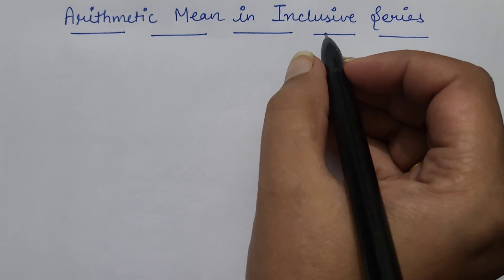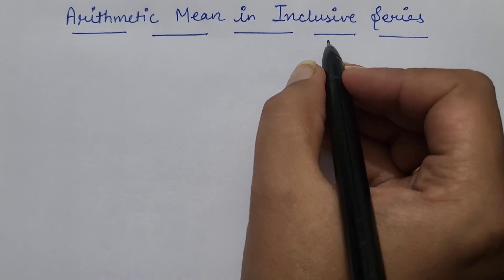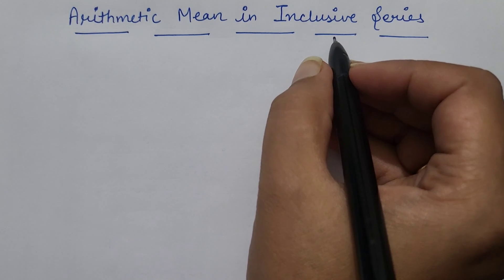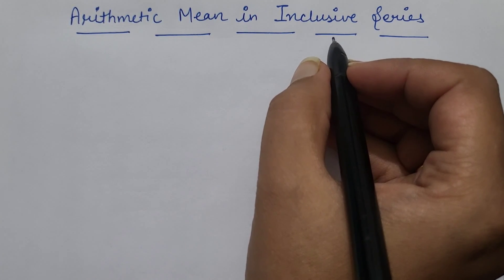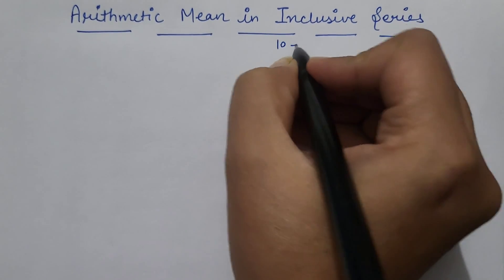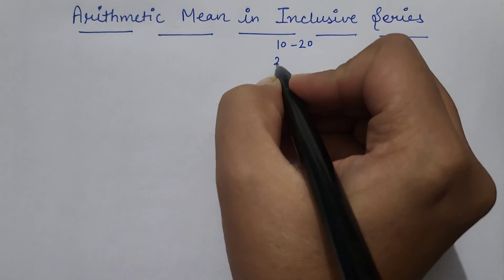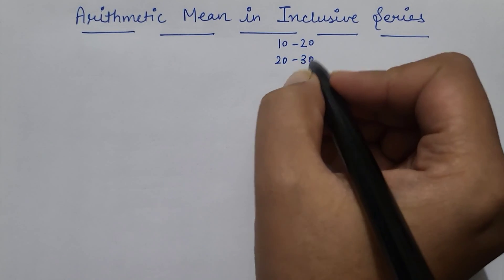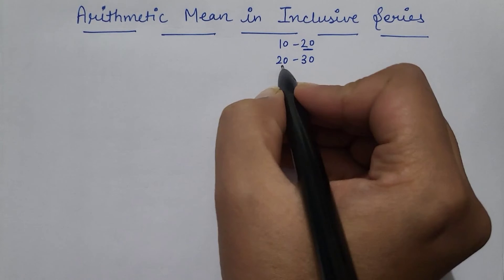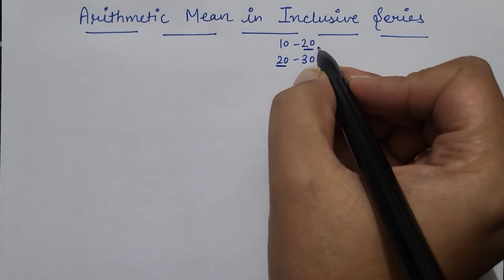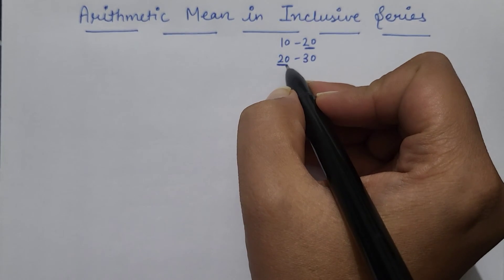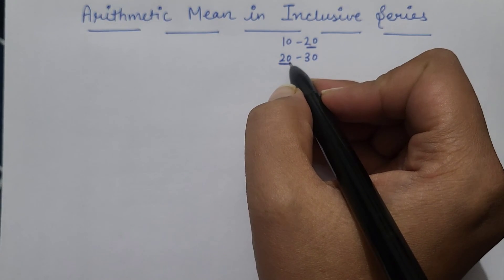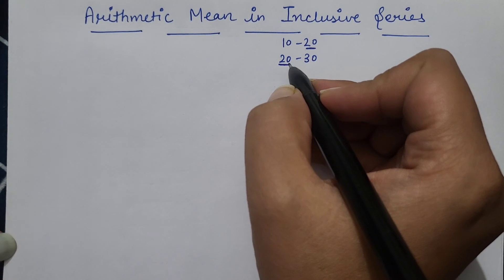So first here I am taking inclusive series. Inclusive series kya hoti hai? We covered continuous series in the last lecture where class intervals were taken like 10 to 20, 20 to 30. Such kind of series was exclusive series because the upper limit of one class was matching with the lower limit of the other class. So such kind of series are totally exclusive series.